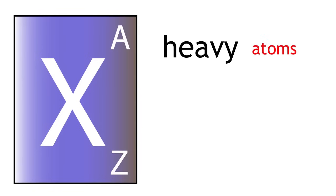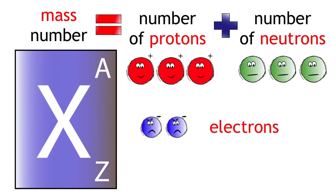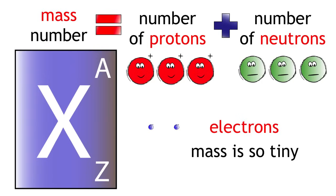But sometimes you can find heavy atoms of a particular element. These atoms have a higher mass number. The mass number is equal to the number of protons plus the number of neutrons. We can ignore the electrons as their mass is so tiny.